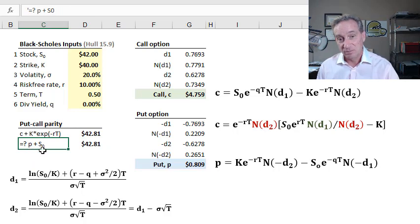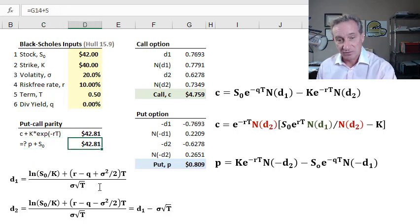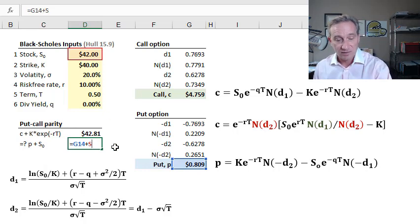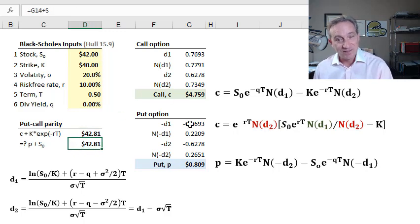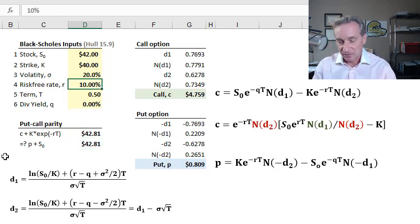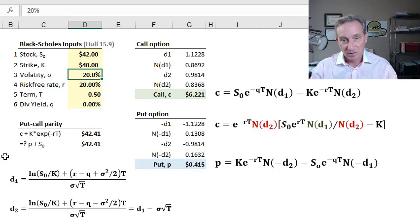Then I compare it to what can be easily called a protective put. The price of the put plus the initial stock price. You see how easy that is. Put, $0.81 plus initial stock price, $42, is $42.81. These need to match. I include that to give me comfort that my numbers are correct.